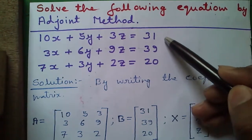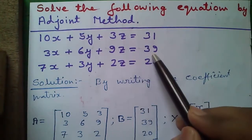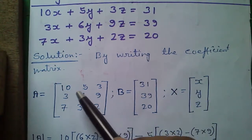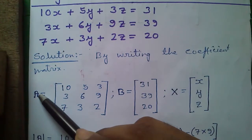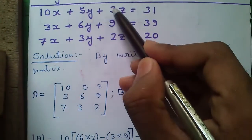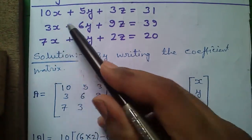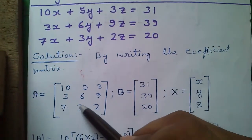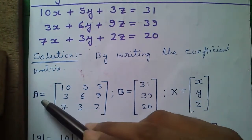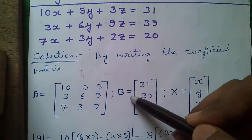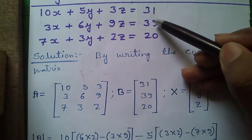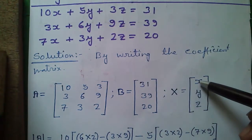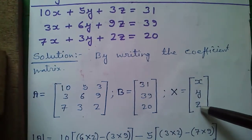This is our system of 3 linear equations and we have to solve it by the adjoint method. First, we will write the coefficient matrix A by writing all the coefficients: 10, 5, 3, 3, 6, 9, 7, 3, 2. Next, matrix B equals all the numbers on the right-hand side: 31, 39, 20. And X represents the unknowns — X, Y, and Z — which we have to find out.